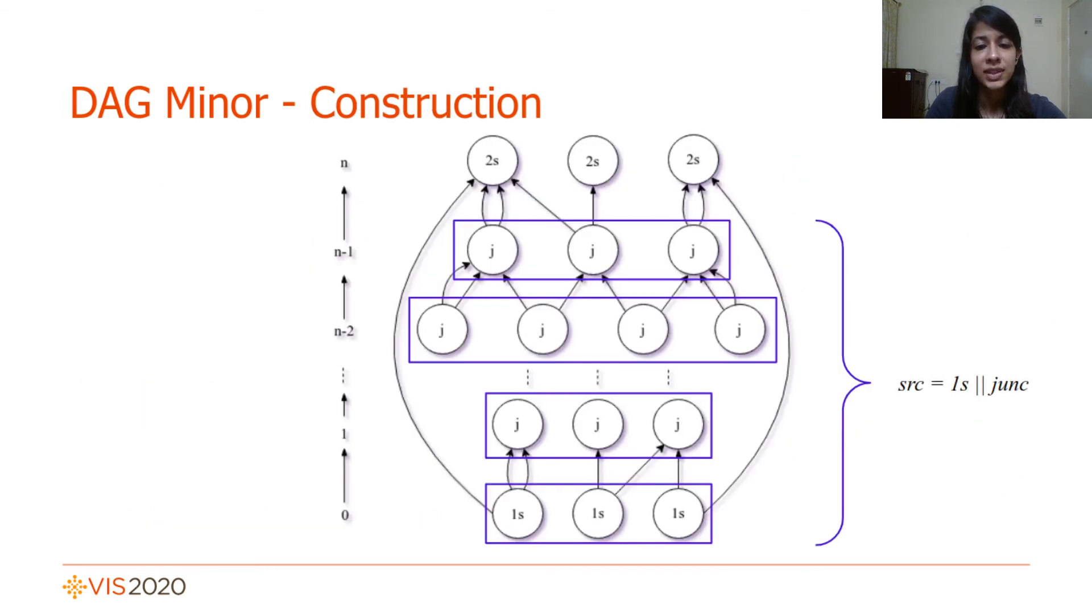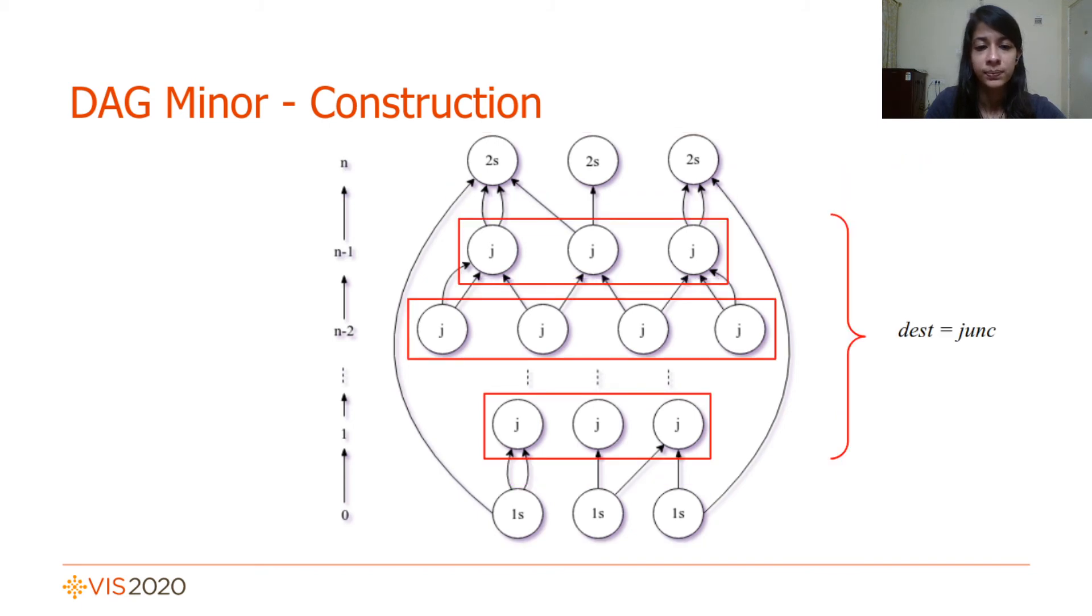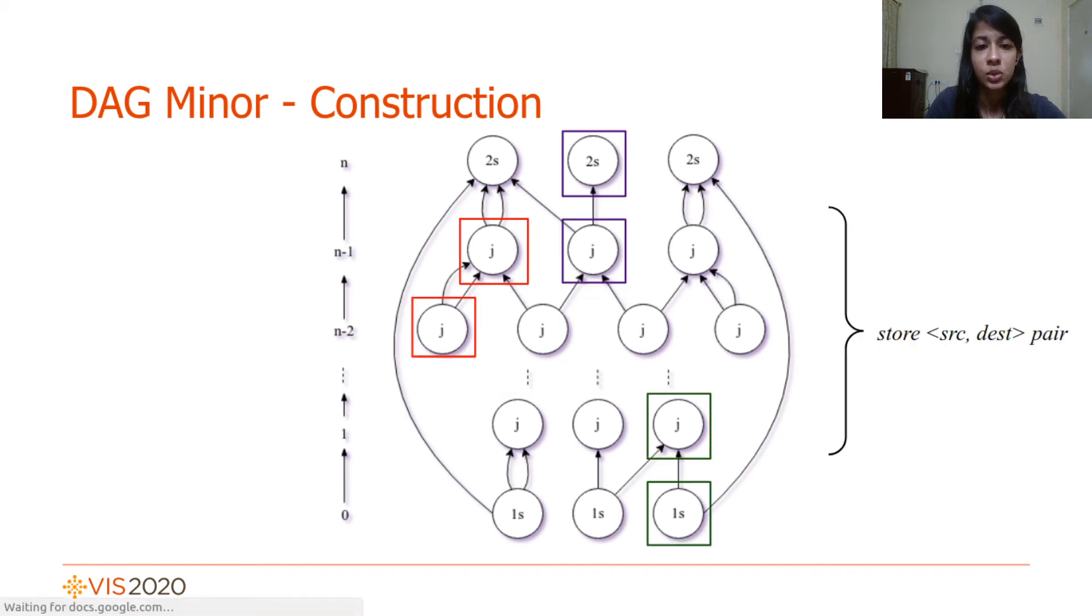The construction of the DAG-minor is initiated in parallel by considering all 1-saddles and junction nodes as sources. Each path is traced in parallel and the destination node can either be a 2-saddle or a junction node. Since these are simple paths, each path is guaranteed to reach its destination without splits, and the final step involves the storage of each unique source-destination pair by the corresponding thread.